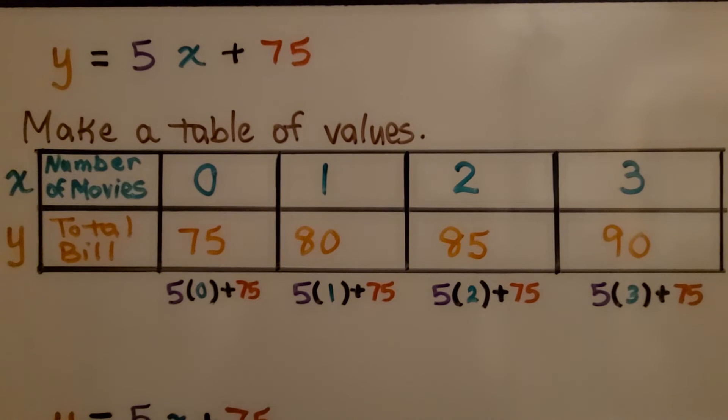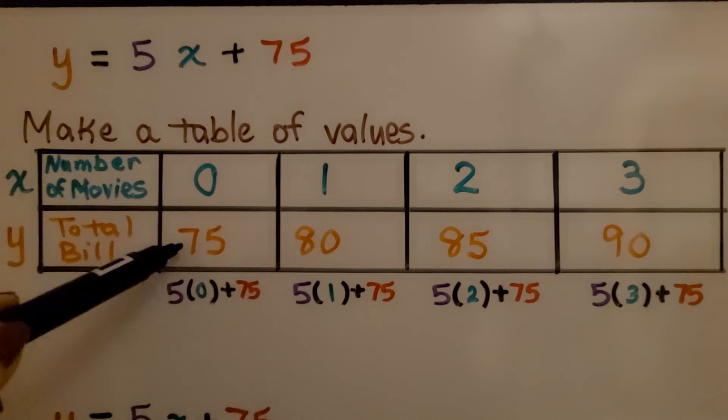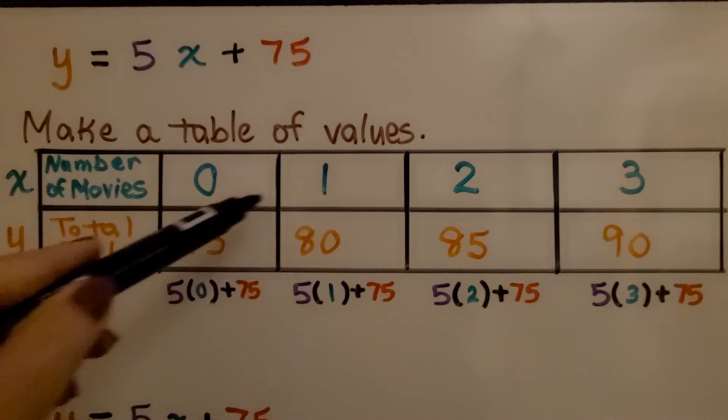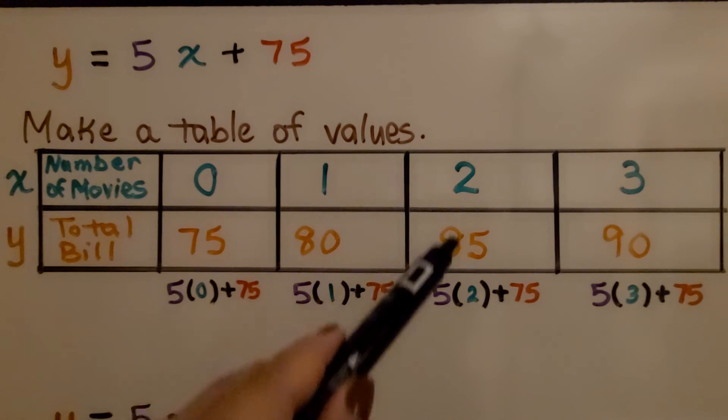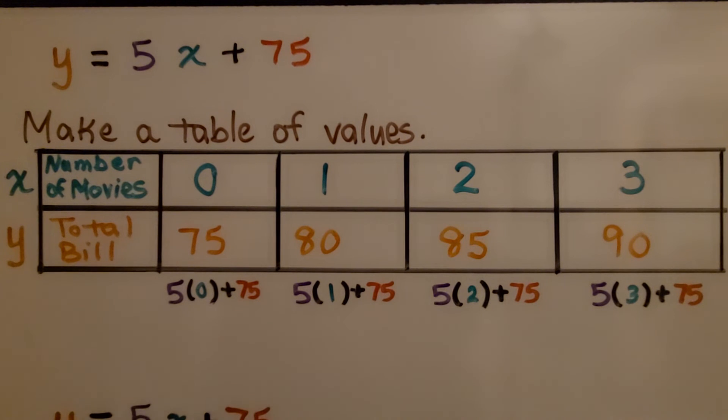We have our equation, y = 5x + 75. We make a table of values for the number of movies to the total bill. If he rents 0 movies, his bill is going to be $75. If he rents 1 movie, then we need to add $5, it's going to be $80. If he rents 2 movies, now we need to add $10 to the bill.